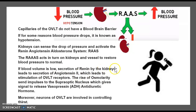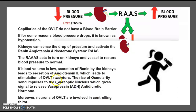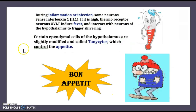Keep in mind the kidneys do not produce angiotensin 2 — it's actually your lungs that produce it — but by the production of renin, the production of angiotensin 2 gets triggered. That leads to the stimulation of OVLT receptors. The rise in osmolarity will send impulses to the supraoptic nucleus, which gives the signal to release vasopressin, known as antidiuretic hormone. Furthermore, neurons of the OVLT are involved in controlling thirst.